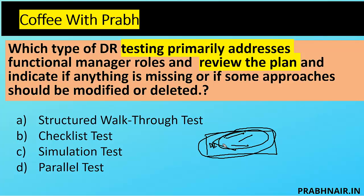Option B is the checklist test. The checklist test is actually the first test we do, where the DR coordinator distributes the plan to all the team heads — HR head, backup operator head, IT head, finance head, telecom operator head, travel and advisory head. These department heads check their area of the plan and verify whether everything is accurate. If they find any gap, they notify the DR coordinator.